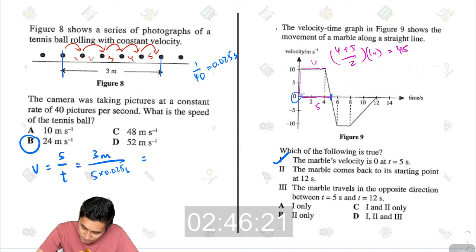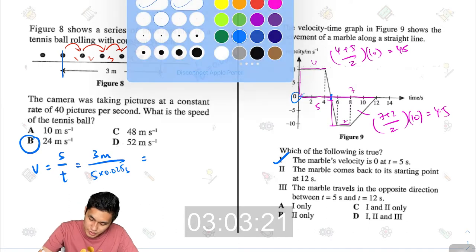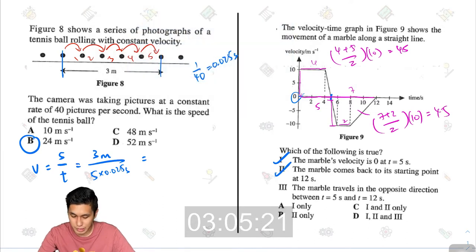Same thing here, from 5 to 12, that is 7, 6 to 8, that is 2. So the area for this part is 7 plus 2 divided by 2 multiplied again by the height, which is 10, and you will get the same answer, 45. So yes, the marble did come back to its starting point.